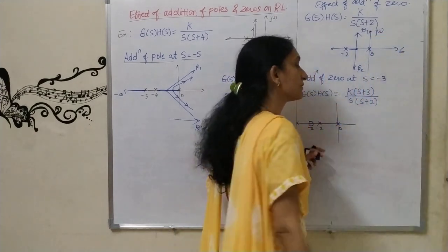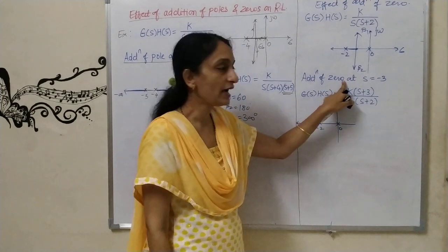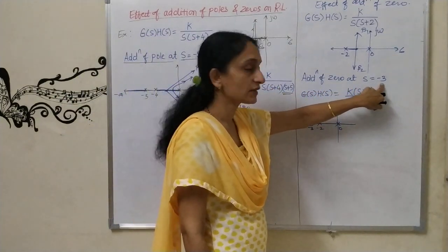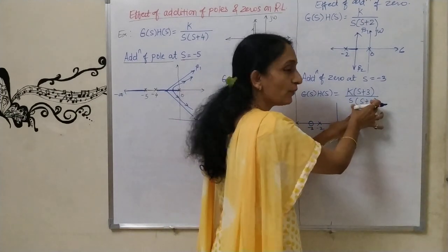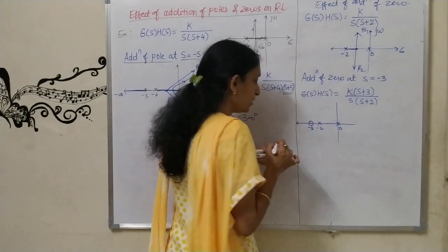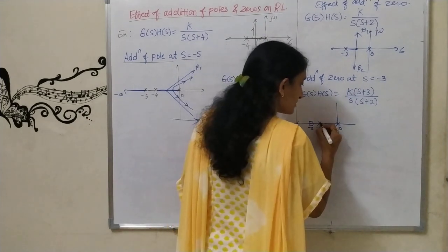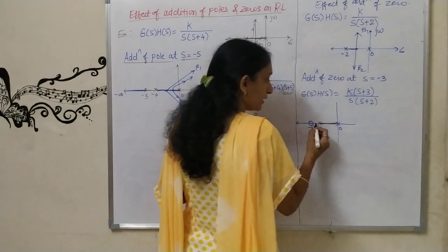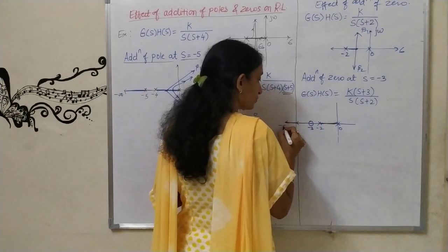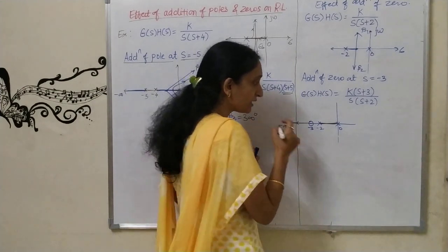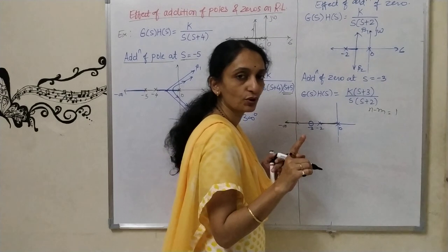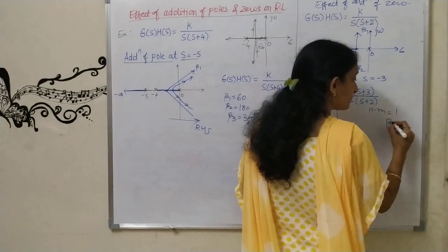Now I am adding a zero at s = −3. Here there are two poles and one zero. Out of two root loci, one will terminate at the zero and one at infinity. The two poles are adjacent, so this segment is the region on root locus. Since n minus m = 2 − 1 = 1, there is only one asymptote, with angle β = 180°. This real axis line itself is β = 180°.